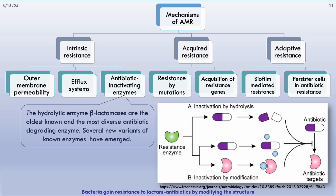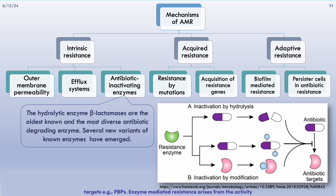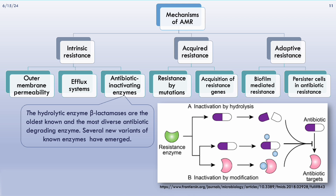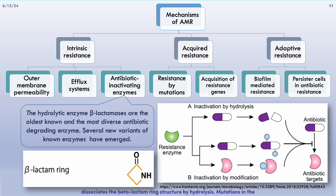Bacteria gain resistance to beta-lactam antibiotics by modifying the structure of antibiotics or their targets, preventing antibiotics from binding to their targets — for instance, penicillin-binding proteins. Enzyme-mediated resistance arises from the activity of beta-lactamases, enzymes produced by both gram-positive and gram-negative bacteria. Beta-lactamase is a protease that dissociates the beta-lactam ring structure by hydrolysis.